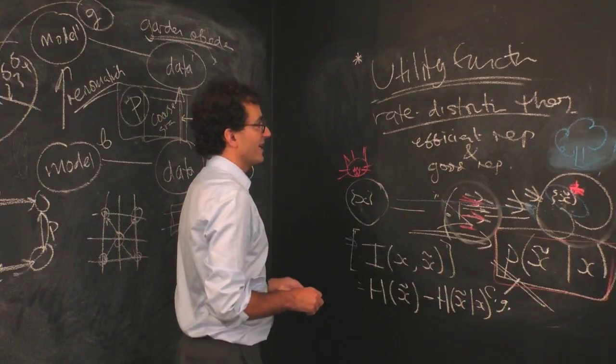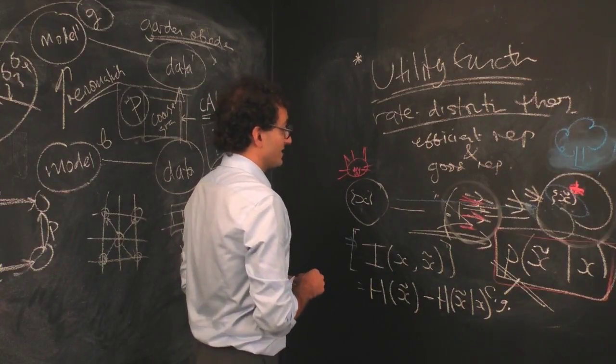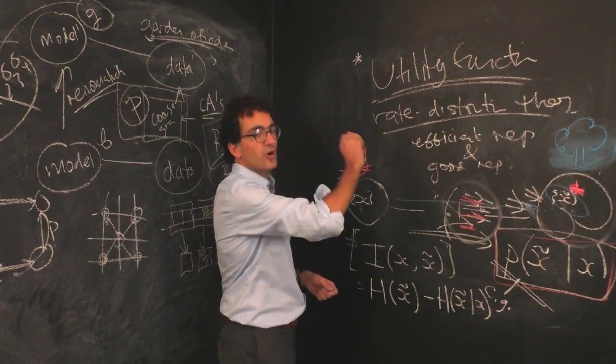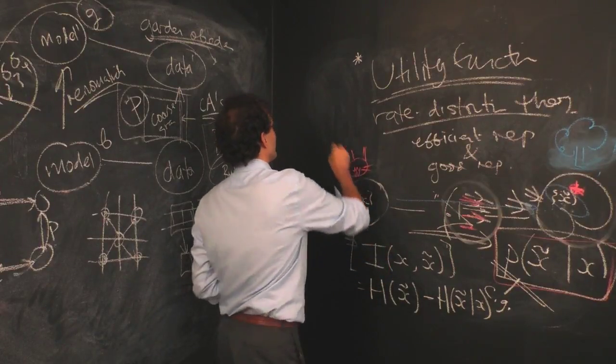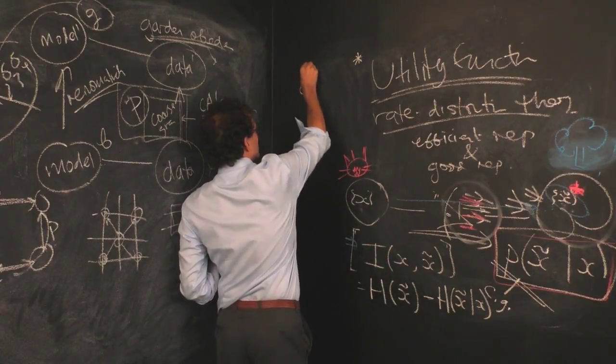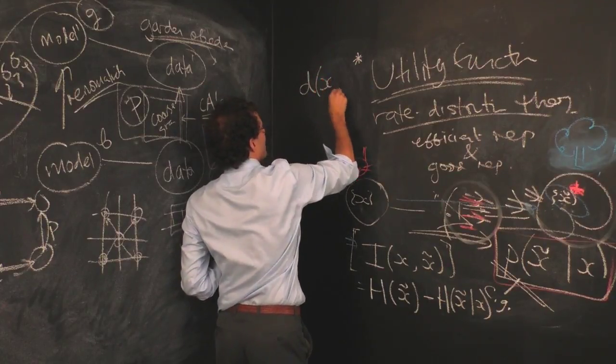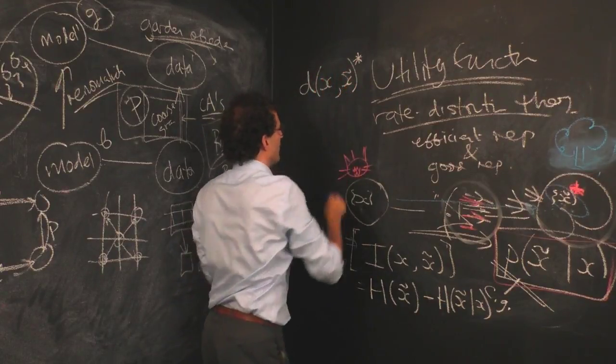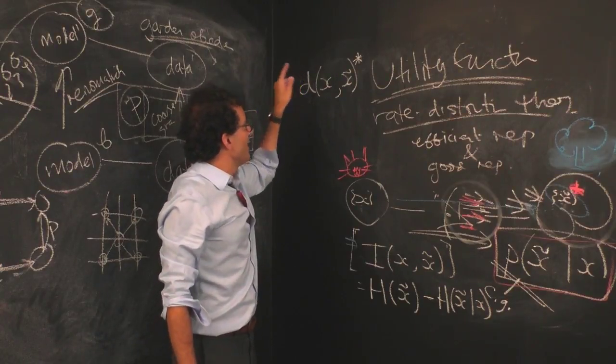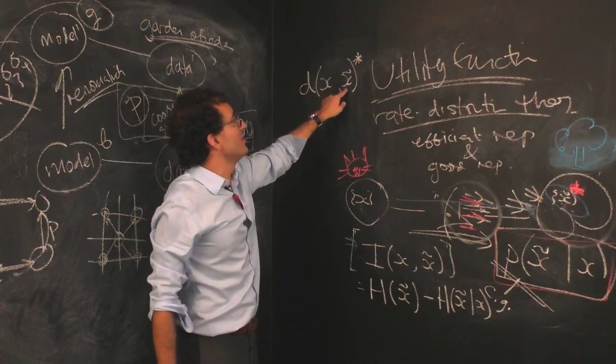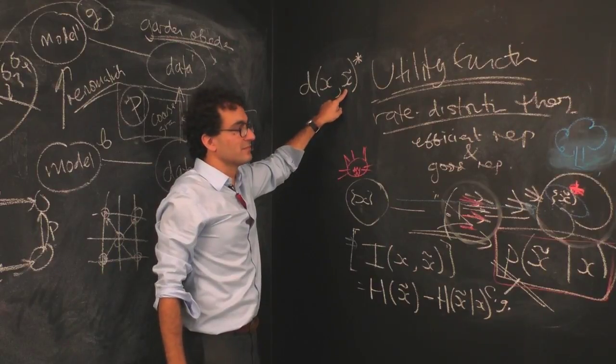What rate distortion theory says, or makes clear, is that in fact, there's no good answer. Or rather, the answer has to be specified ahead of time. And what we do is we prescribe a distortion measure d of x, x twiddle. d is the penalty for what happens if the world is in state x and you think it's in state x twiddle.